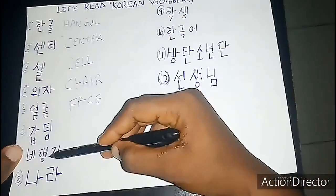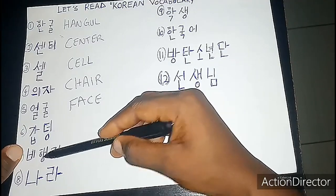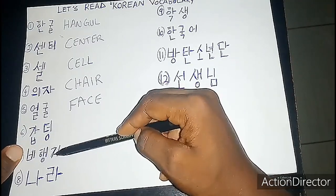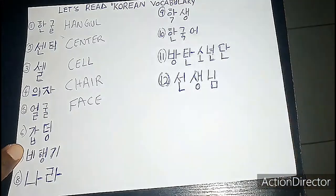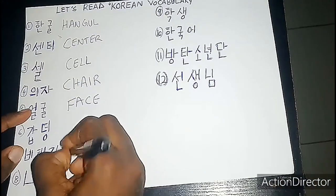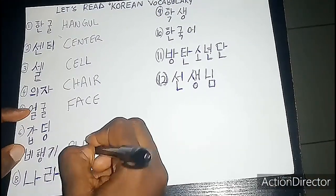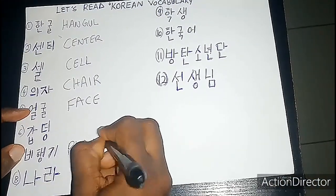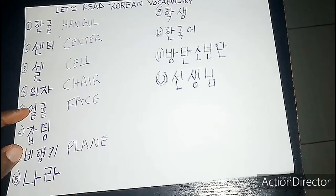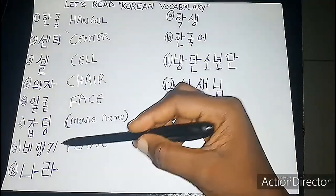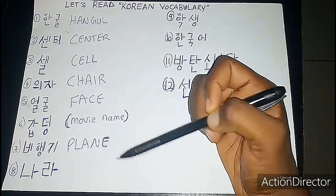Now this is 비행기 — bihaengi. Bihaengi. This is the word for 'plane.'